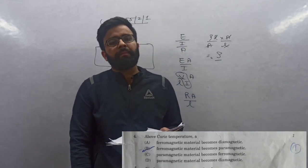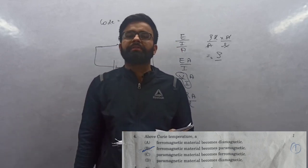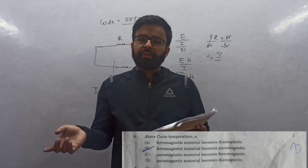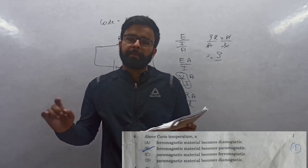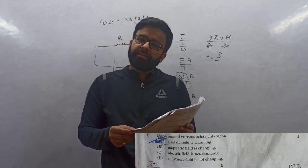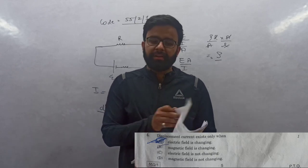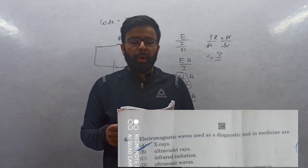Question 4: Curie temperature is that temperature at which ferromagnetic substance converts into paramagnetic substance. Their domains start to break. Answer is ferromagnetic becomes paramagnetic. Question 5: Displacement current according to Maxwell comes when electric field changes. Answer is electric field is changing. Question 6: Electromagnetic waves used as diagnostic tool in medicine.